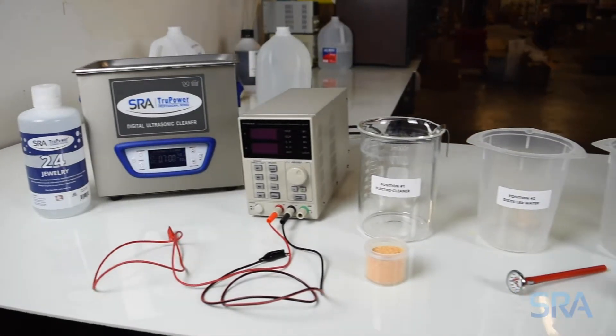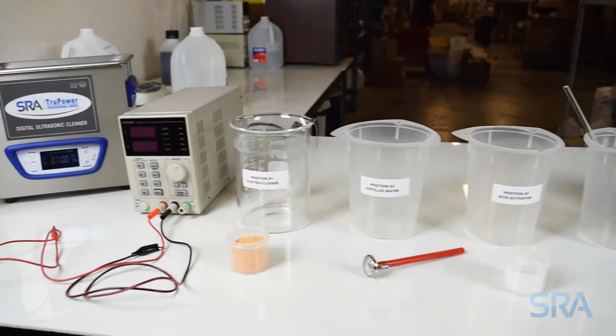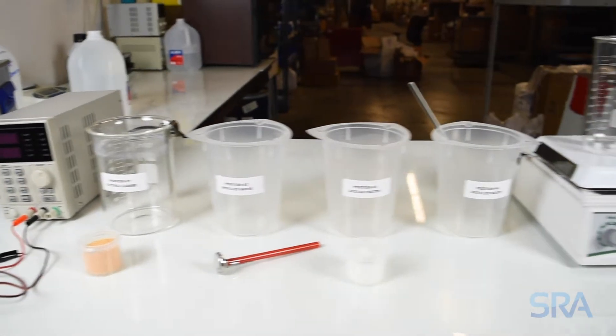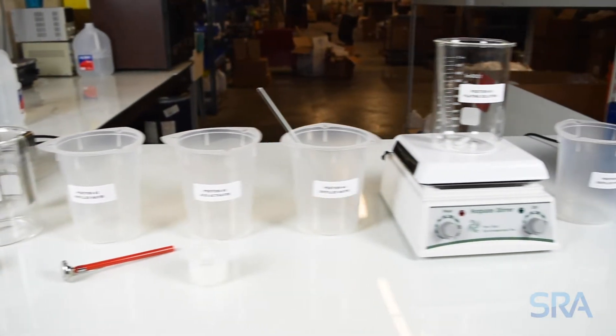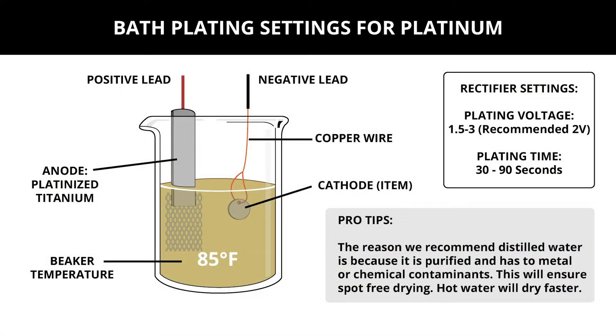In the previous video we went over how to properly set up your work area for plating, but let's now go over the recommended settings for platinum. Your plating beaker should be heated to 85 degrees Fahrenheit and use a platinized titanium anode. For the plating rectifier we recommend 2 volts with a 30 second to one and a half minute plate time.